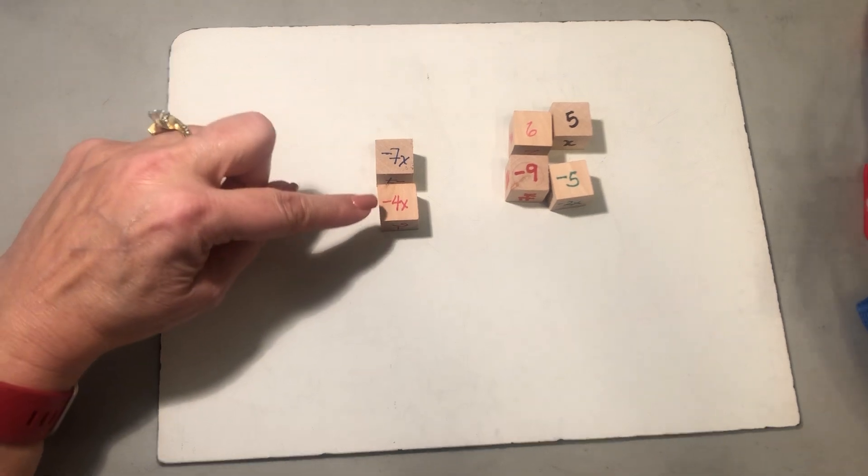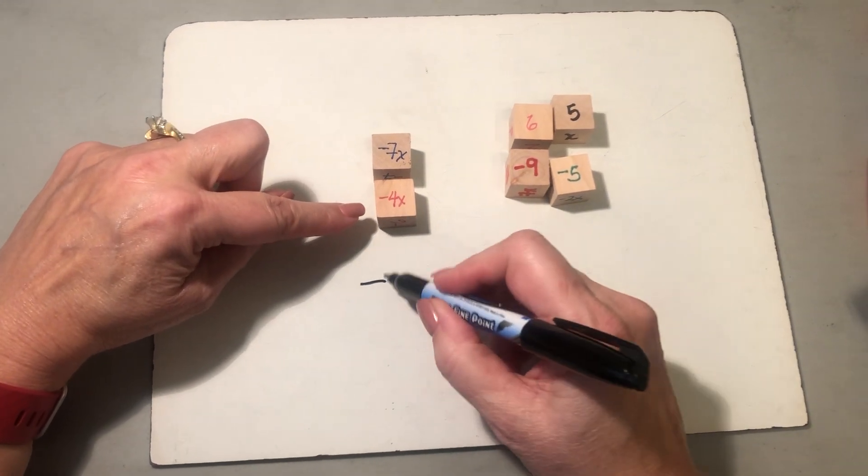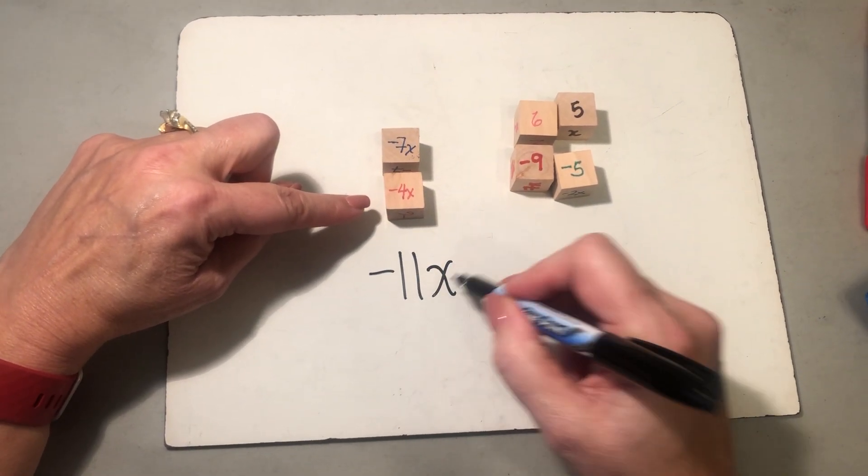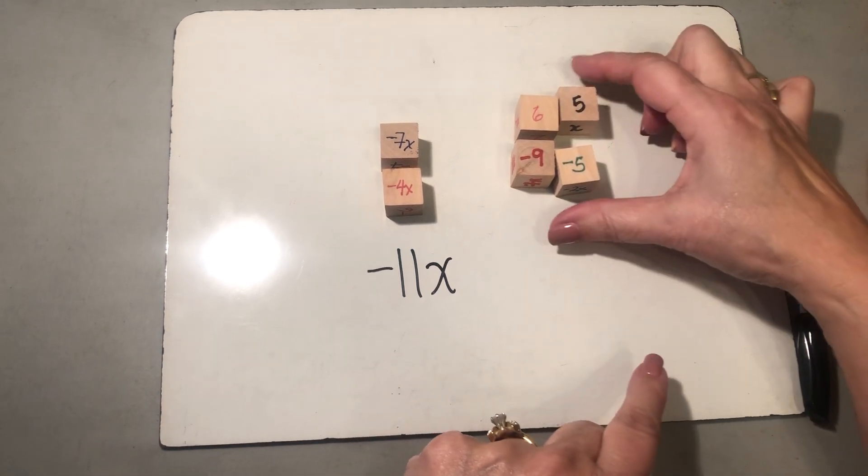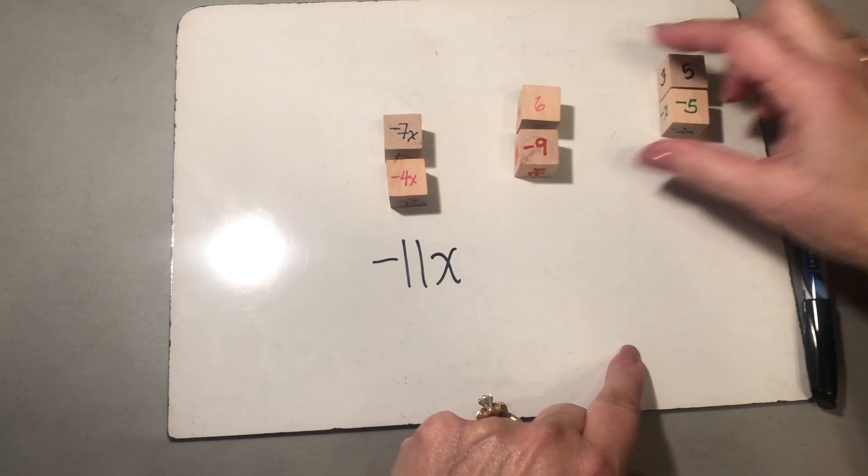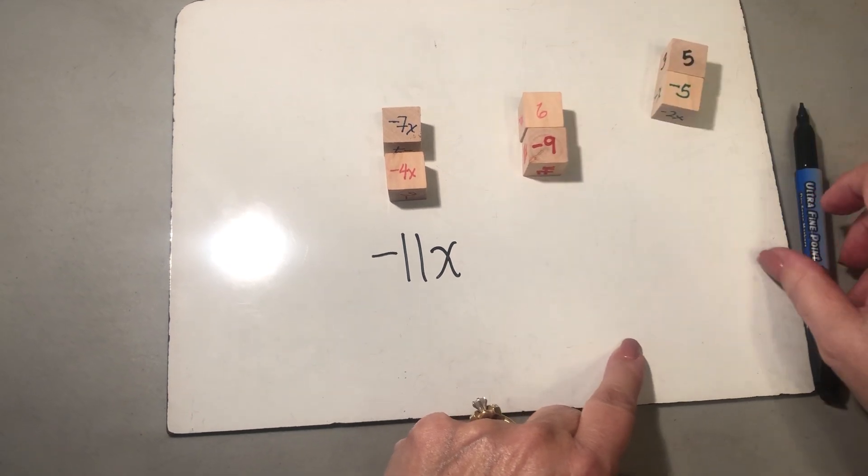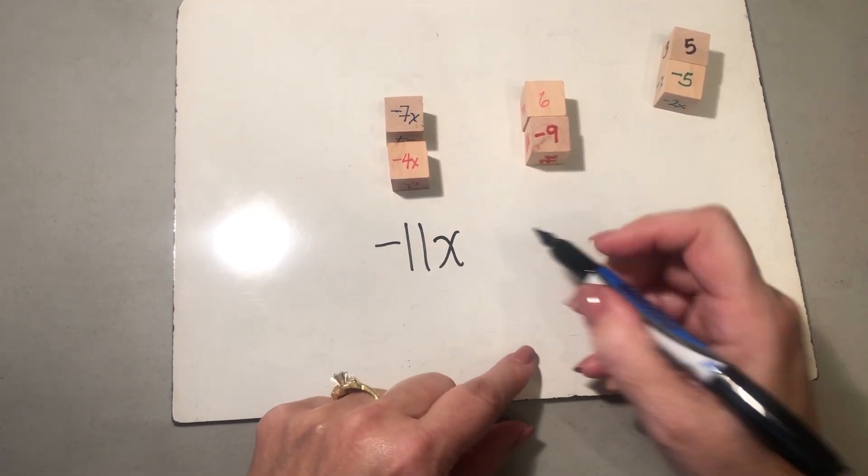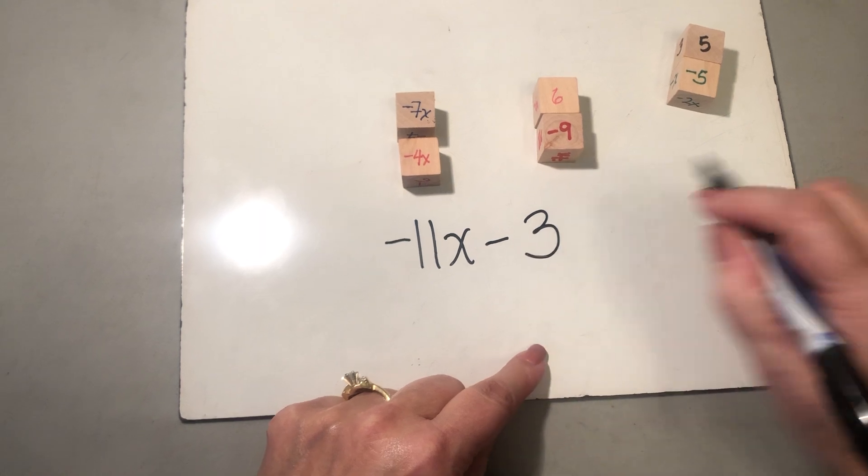Here I have a negative 7 and a negative 4 together that gives me negative 11x's, and then over here I have that zero pair, they're opposite. I'm going to take that out, and then over here I'm going to put these together so we know positive 6 and a negative 9 give us negative 3.